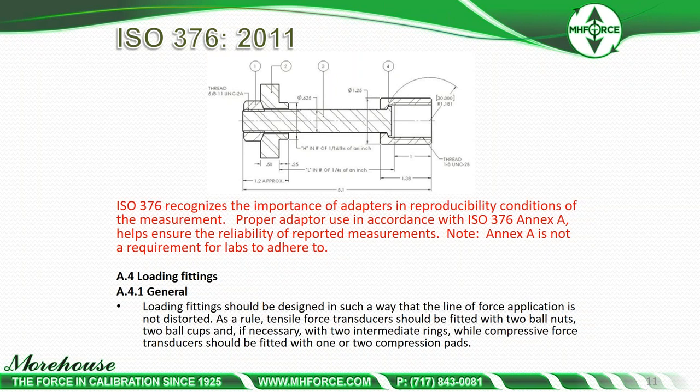ISO 376 section A.4.1 says loading fittings should be designed so that the line of force application is not distorted. As a rule, tensile force transducers should be fitted with two ball nuts, two ball cups, and if necessary two intermediate rings, while compressive force transducers should be fitted with one or two compression pads.